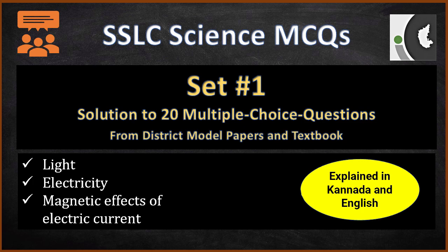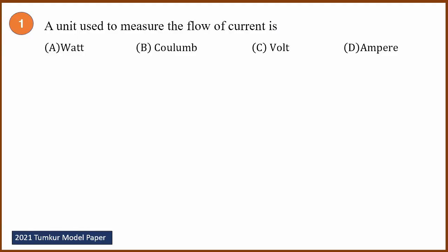The first question — this is a Tumkur model paper question. A unit used to measure the flow of current. The options are: Ampere, Watt (unit of power), Coulomb (unit of charge), and Volt (unit of potential difference). Ampere is the unit of the flow of current.